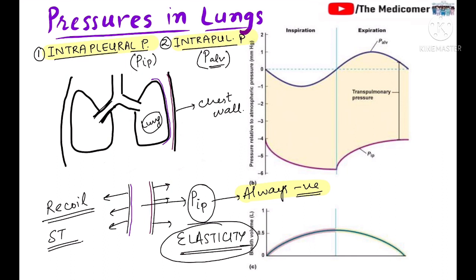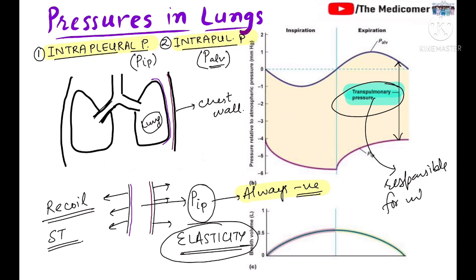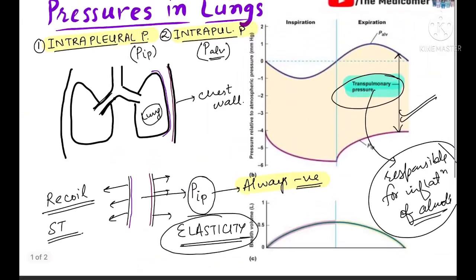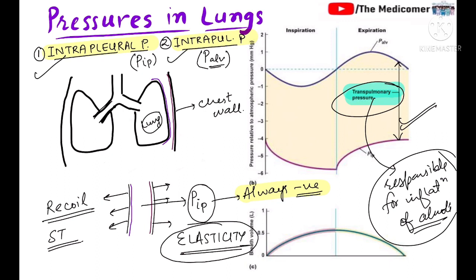The third pressure is the transpulmonary pressure — the difference between intrapulmonary pressure and intraalveolar pressure. This pressure is responsible for the inflation of the lungs and alveoli, because it takes into consideration both the chest wall factors and the factors related to the lungs. So in summary, the three basic pressures are: intrapleural pressure, intrapulmonary pressure, and transpulmonary pressure.